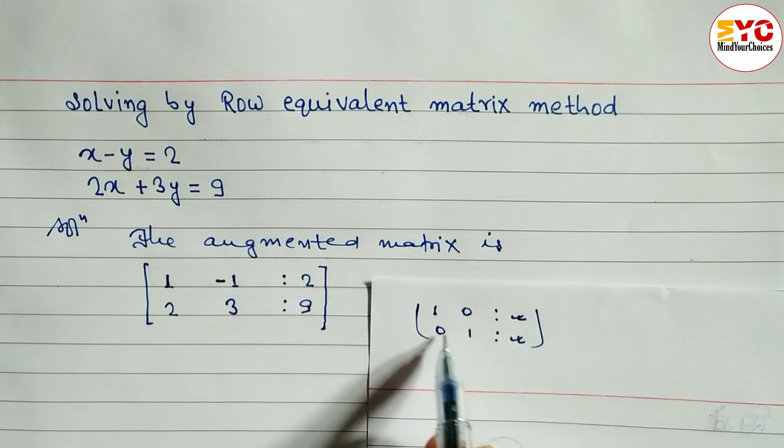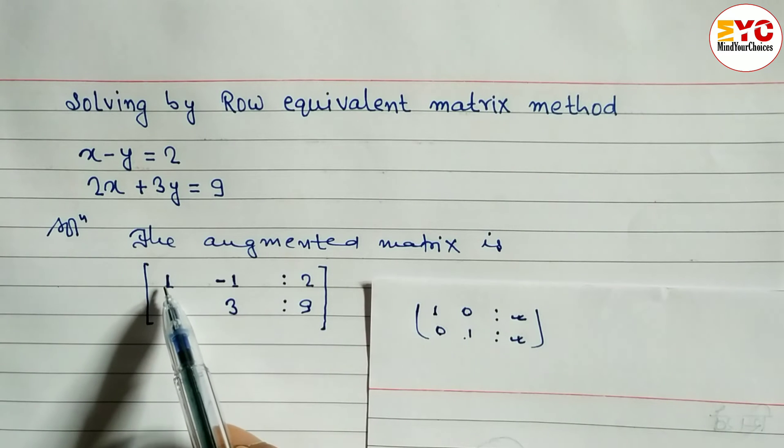And here constant number we will get. So 1, 0, 0, 1. We have to convert this in the form of identity matrix. Here already 1, so no need to do anything. Here is 2.